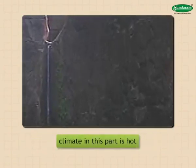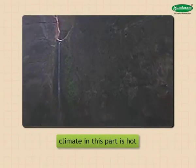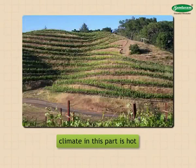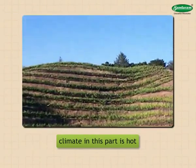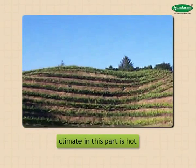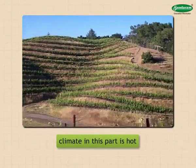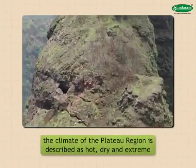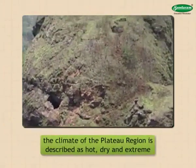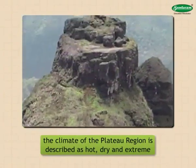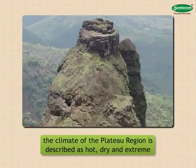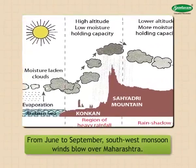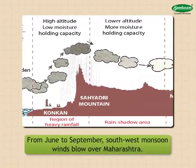The plateau region is at a moderate height; therefore, the climate in this part is hot. It is away from the sea, and therefore the day and night temperatures differ considerably. Similarly, there is a lot of difference in temperature during different seasons. Hence the climate in this region is said to be extreme. It is dry because there is not much moisture in the air. Hence the climate of the plateau region is described as hot, dry, and extreme.